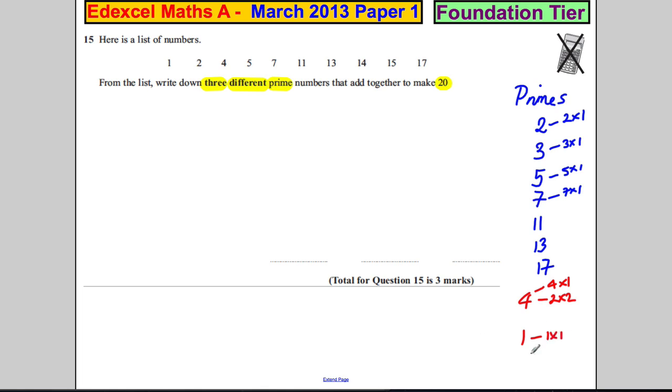So 1 is not prime - cross it off. 4 is not prime, 14 is not prime, and 15 is not prime. Because 4 is 2 times 2, for example. 14 is 7 times 2. 15 is 3 times 5, for example.